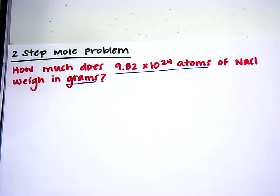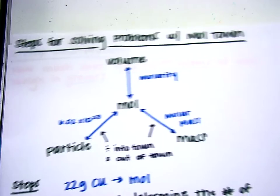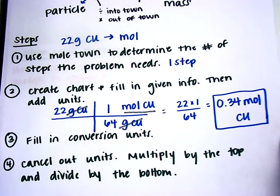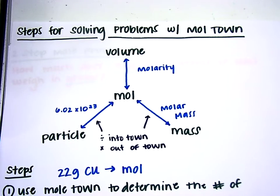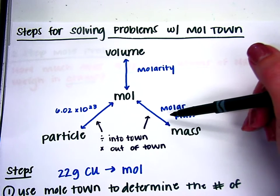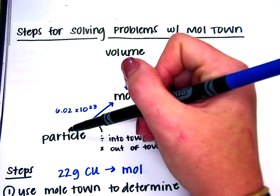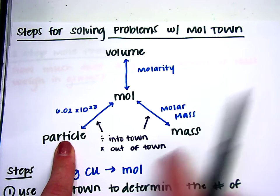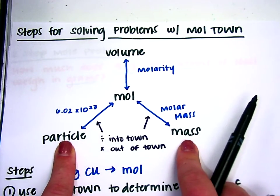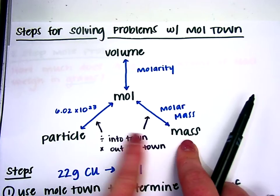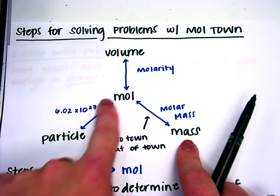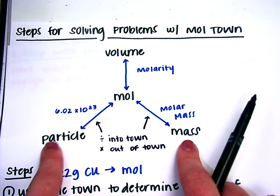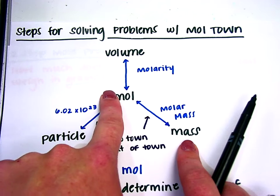So if I want to solve this problem using Moletown, I know the steps we talked about in our first video. I'm going to be converting from my number of atoms, which is a type of particle, and the problem asks me for the number of grams, which is a type of mass. You cannot go off-roading in Moletown, so you have to follow the streets. You'll go from particles to moles, and then you'll convert from moles to mass.